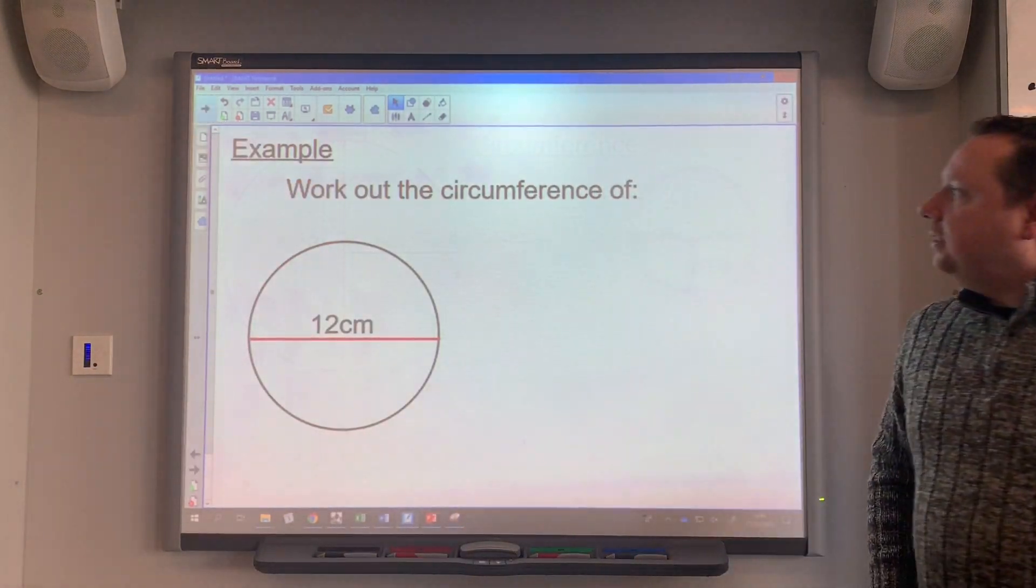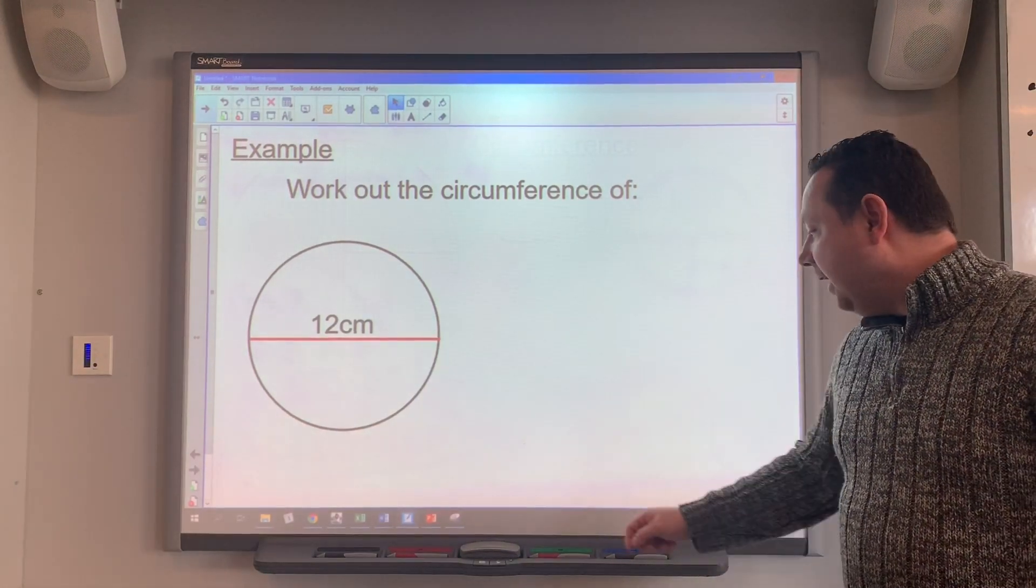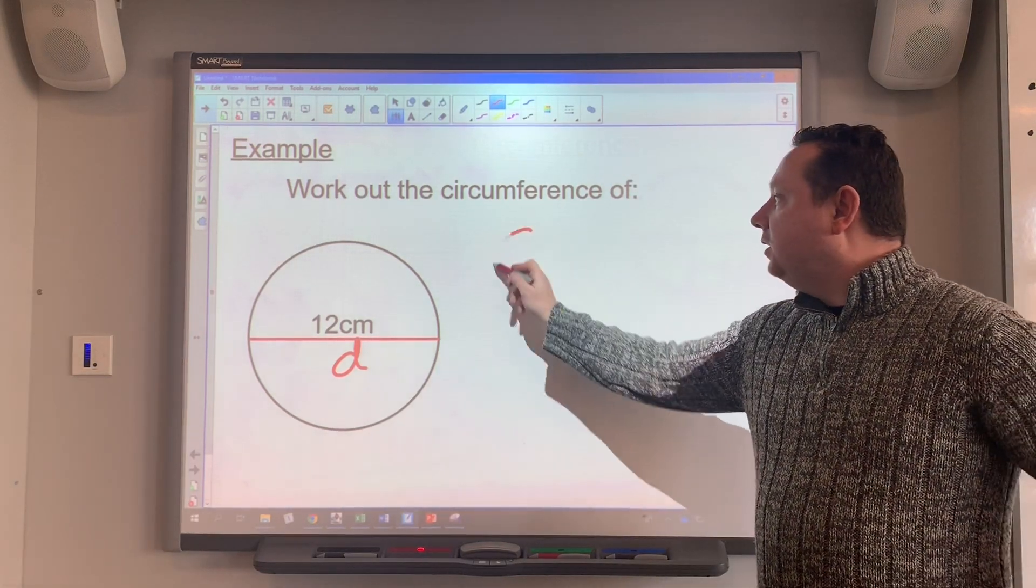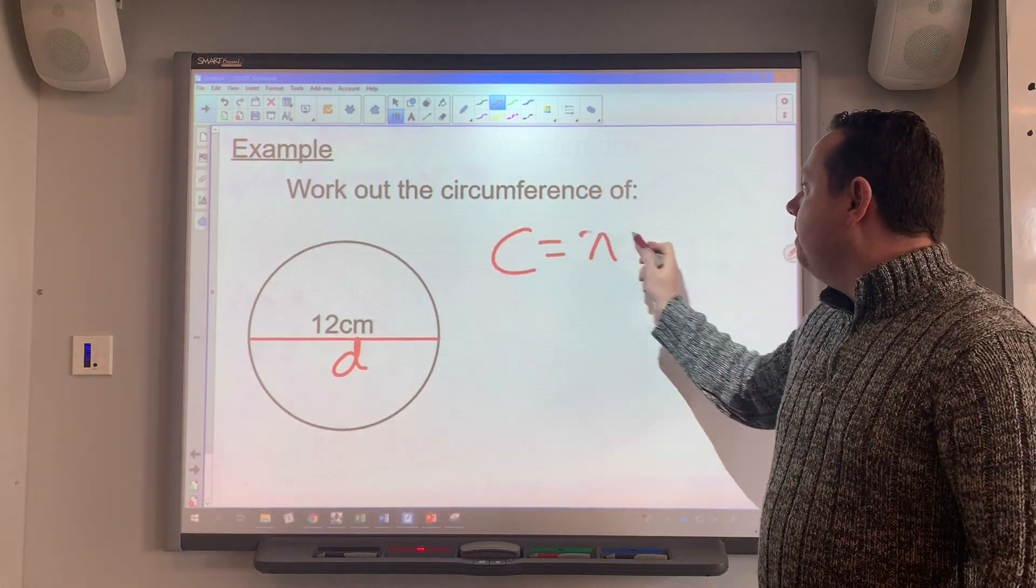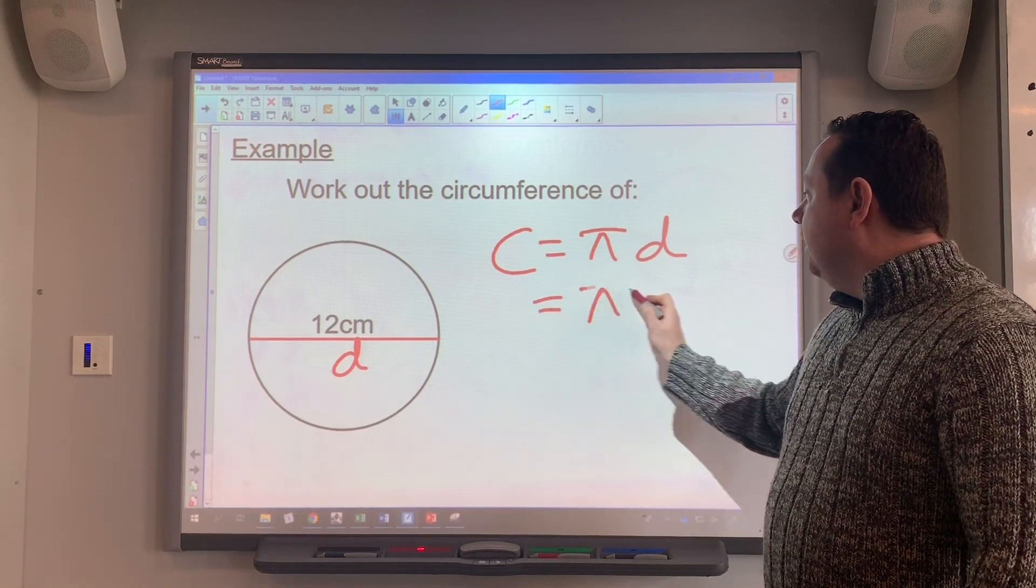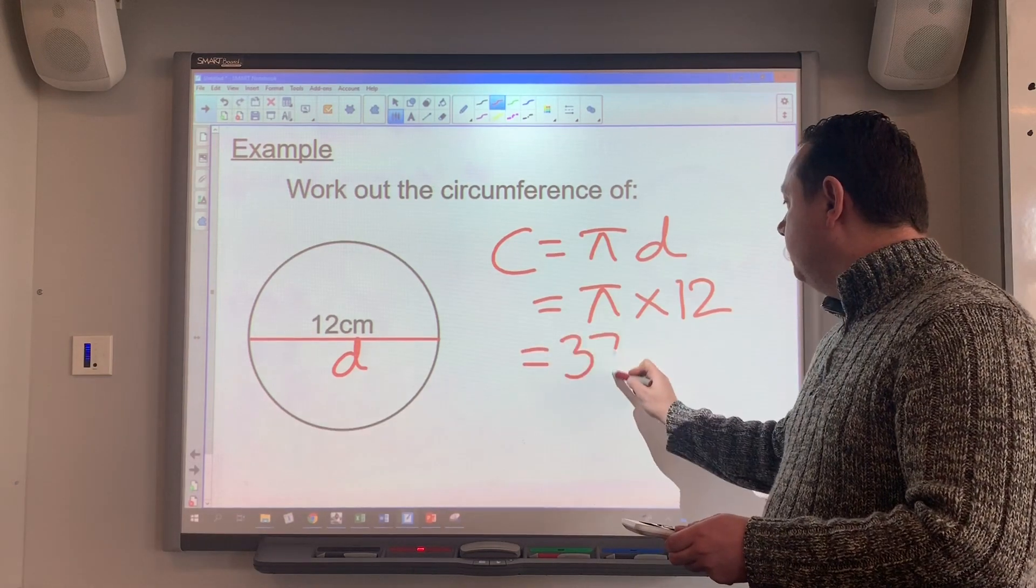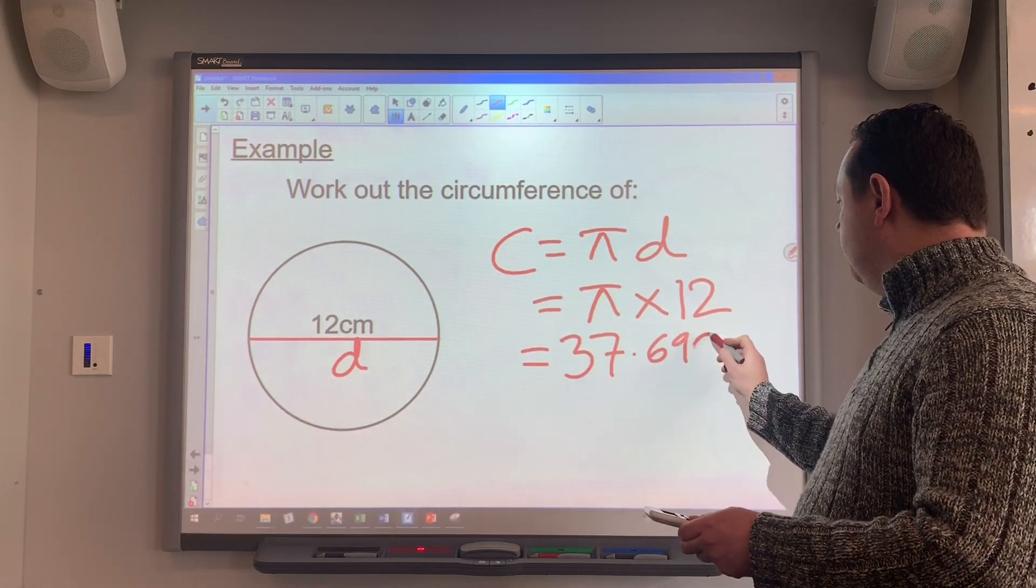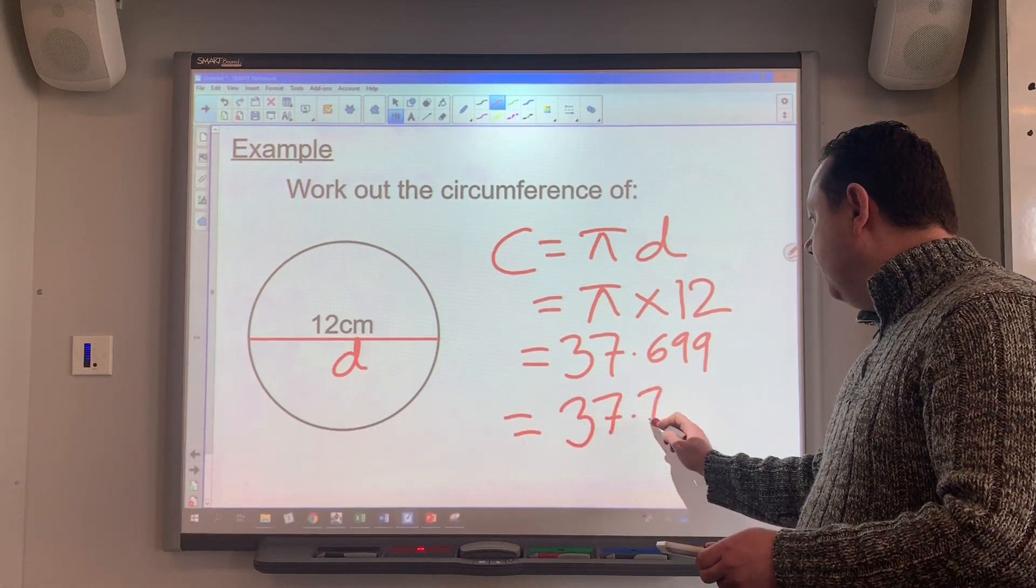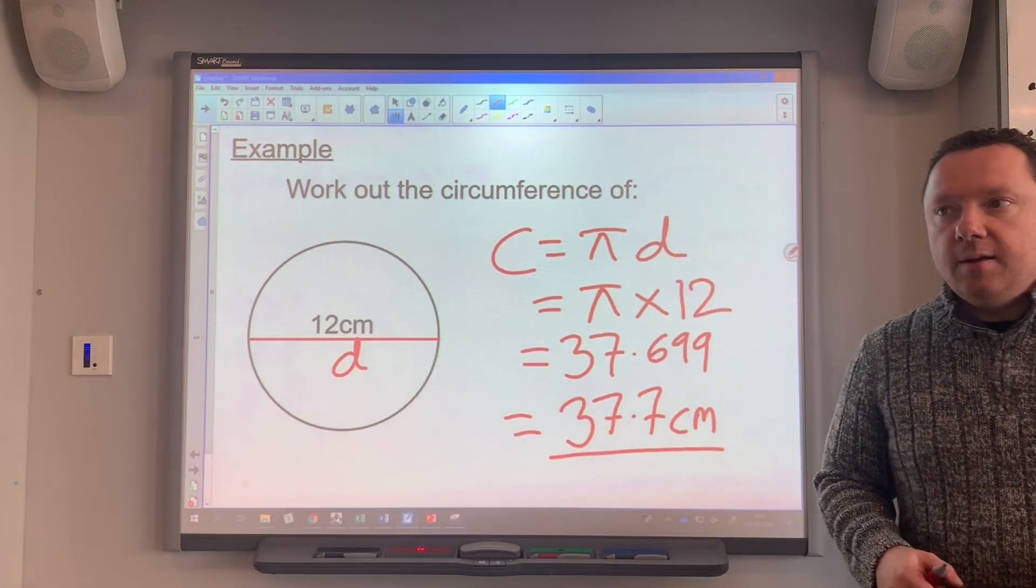So example one says work out the circumference of the circle. So there's my diameter here in red, which is 12. So I always write down the formula: C equals pi D. I substitute pi times 12 and then I work that out, which to one decimal place is 37.7, and the units are centimeters. The units are the same as the diameter.